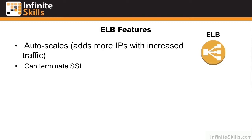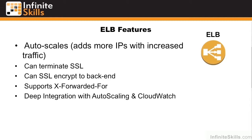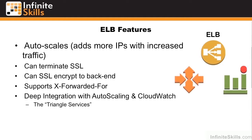It can terminate SSL for secure web connections and encrypt SSL to back-end machines. It supports X-Forwarded-For so that user IPs can be passed through to the web servers. It has deep integration with autoscaling and CloudWatch — also known as the triangle services — with instances in the autoscaling group firing off CloudWatch alarms, which tell the ELB to add more instances to the autoscaling group.